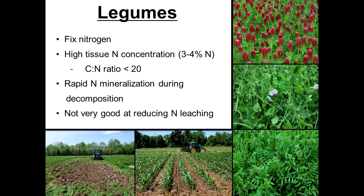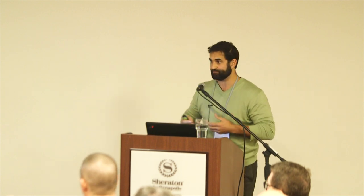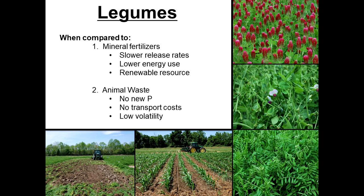Legumes fix nitrogen and have very high tissue nitrogen content — low C:N ratios, often below 25:1, sometimes 18:1. They decompose rapidly, they're not very effective at reducing leaching, but they are adding new nitrogen to the system. Compared to mineral fertilizers, they have a slower release rate — though not as slow as you might think. They're also a lower-energy, renewable resource and have advantages over animal waste: no added phosphorus, no transport costs or volatility.